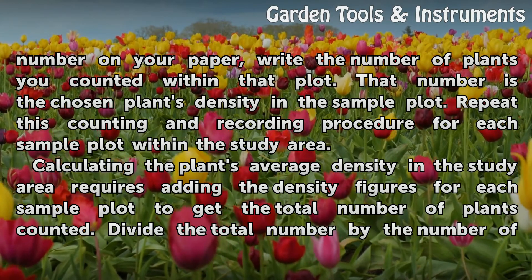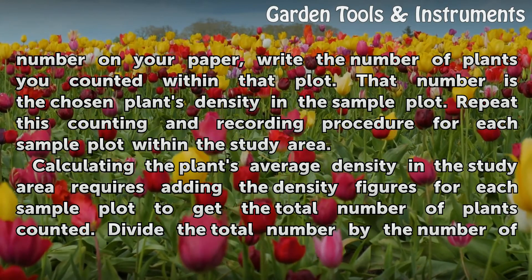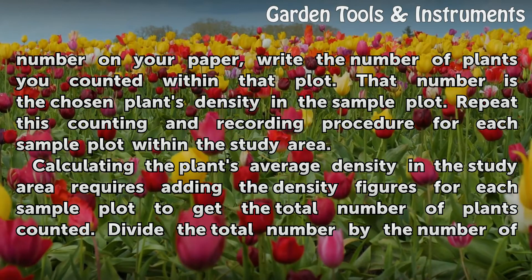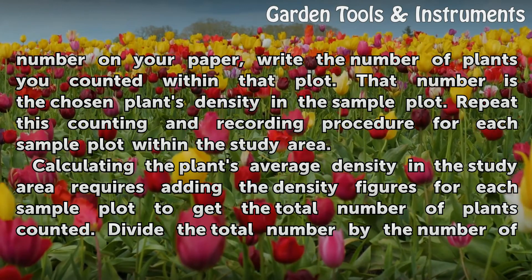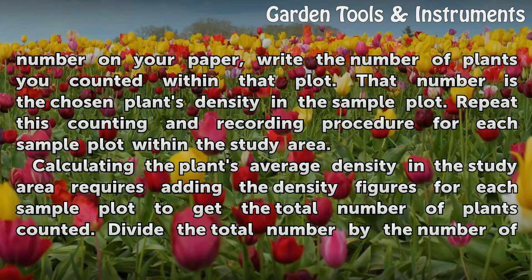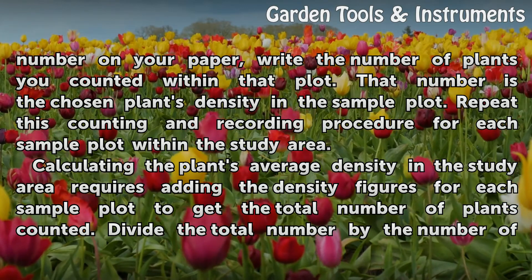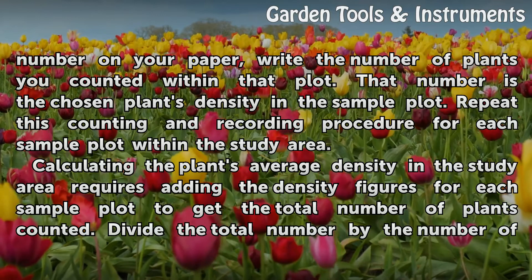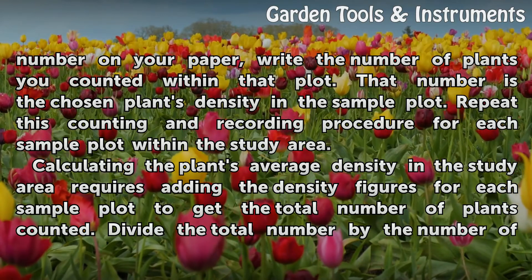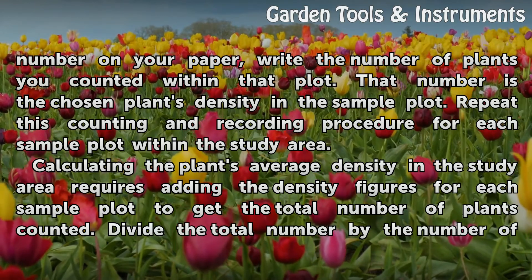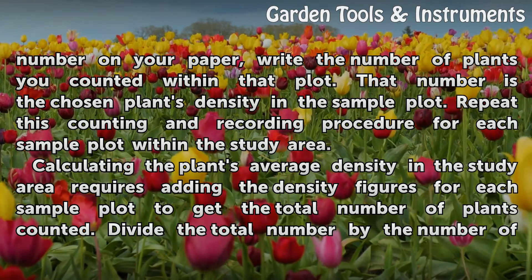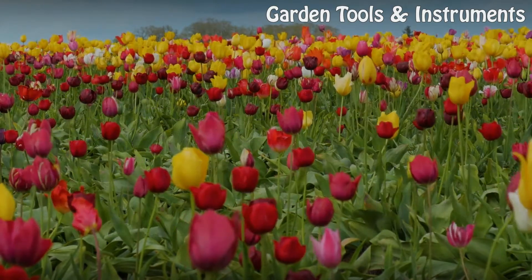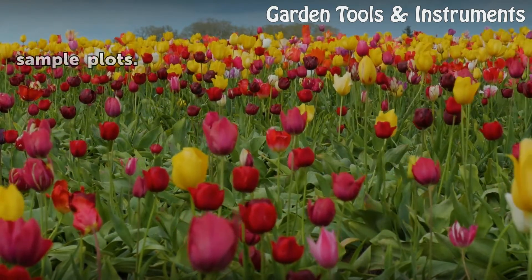Repeat this counting and recording procedure for each sample plot within the study area. Calculating the plant's average density in the study area requires adding the density figures for each sample plot to get the total number of plants counted, then dividing the total number by the number of sample plots.